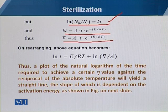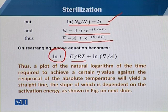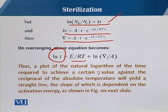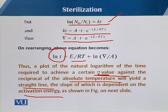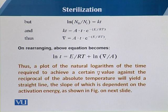On rearranging the above equations, the equation becomes: ln(t) = E/RT + ln(Del factor / A), where A is the Arrhenius constant. The plot of the natural logarithm of the time required to achieve a certain Del factor value against the reciprocal of the absolute temperature will yield a straight line, the slope of which is dependent on the activation energy.